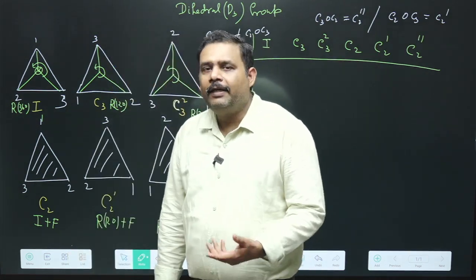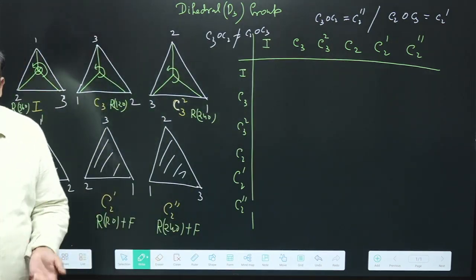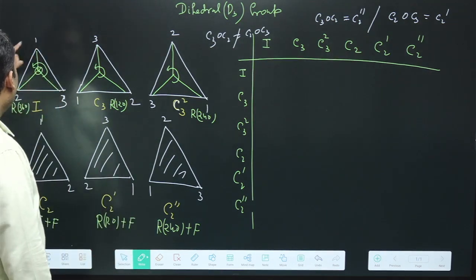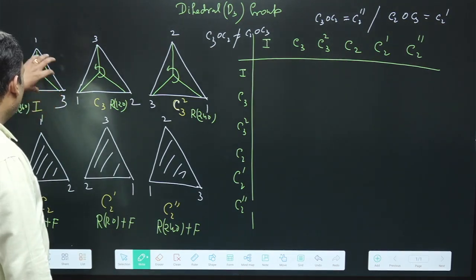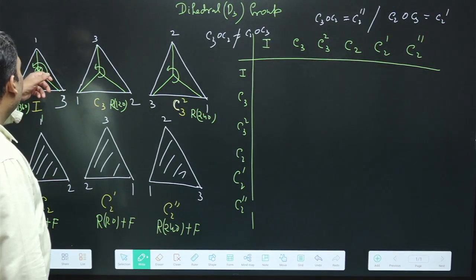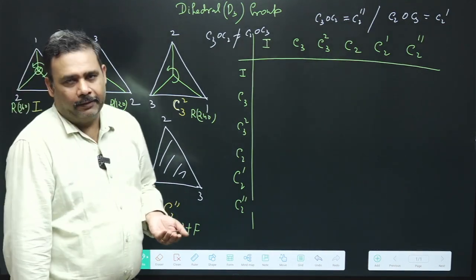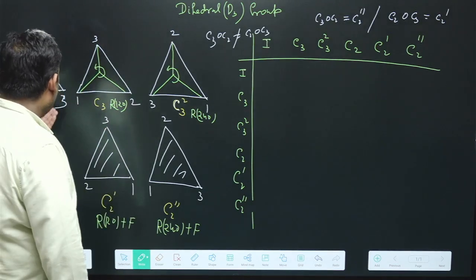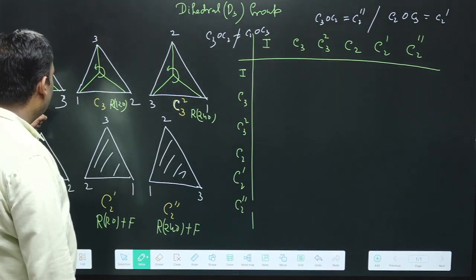The first element is the identity — no rotation, or equivalently a rotation of 360 degrees. We label the corners 1, 2, and 3. Rotating by 360 degrees returns the triangle to the same configuration, so this is known as the identity element, denoted by I.